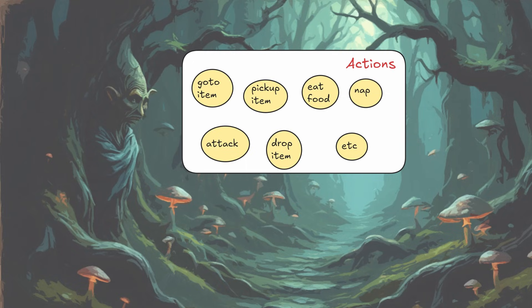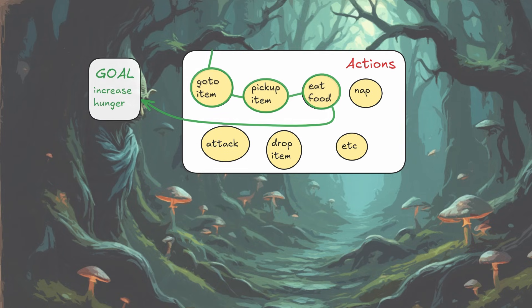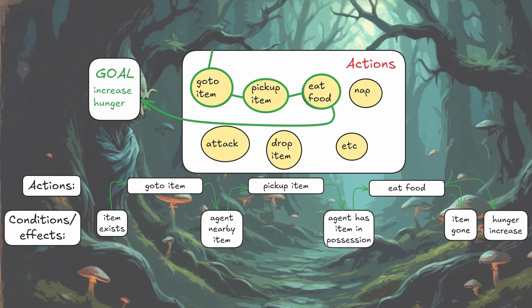If we instead look at this as the goal-oriented action planning framework, say we have a large set of actions with no sort of relationship to each other — I threw in some additional actions like napping, attacking, etc. Once we have the goal to increase hunger, the agent will form its own plan which will chain together these actions. We get the same functionality: we go to the item, pick it up, and eat the food to increase hunger, but we didn't have to explicitly plan that relationship and sequence. This is done by having actions chained together by matching certain preconditions and their effects.